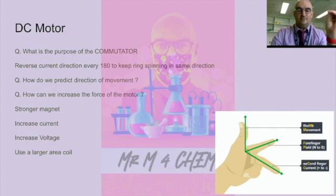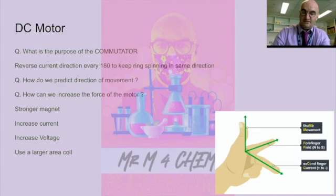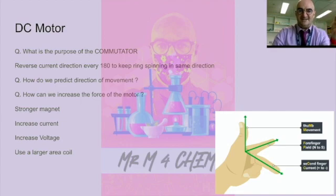At this point, hopefully, you have two to three differences between a DC motor and an AC generator. You know that your slip rings are AC, your commutator is DC. You know reversing current is DC, not reversing current is AC. And to predict the direction of movement, you use Fleming's left-hand rule for the DC motor, not for the AC generator.